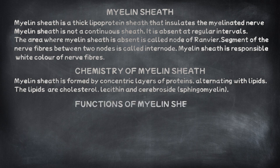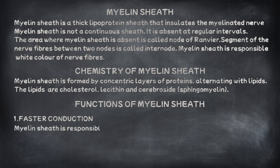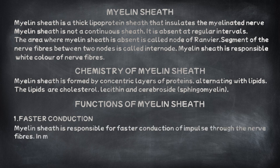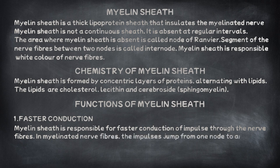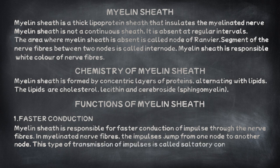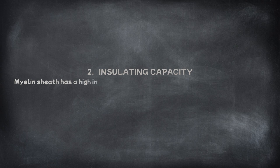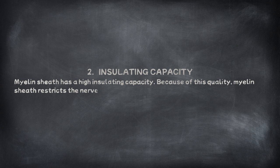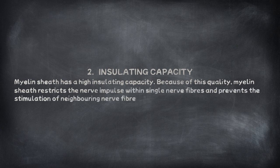The functions of the myelin sheath include: 1. Faster conduction — the myelin sheath is responsible for faster conduction of impulses through nerve fibres. In myelinated nerve fibres, impulses jump from one node to another node; this type of transmission is called saltatory conduction. 2. Insulating capacity — the myelin sheath has a high insulating capacity, which restricts the nerve impulse within a single nerve fibre and prevents stimulation of neighbouring nerve fibres.